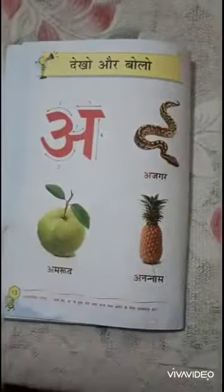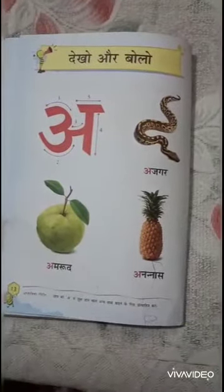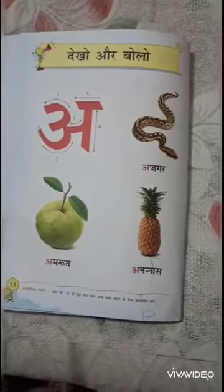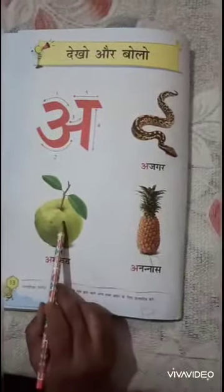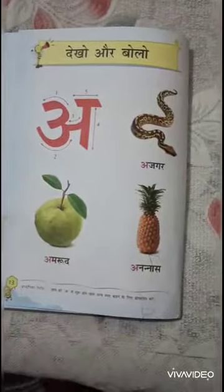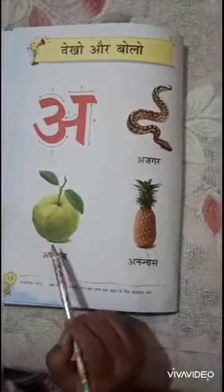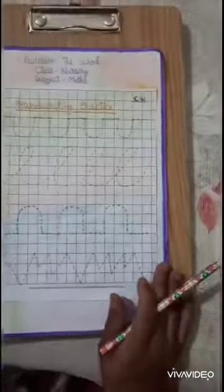Okay students, आप देखे, देखो और बोलो। A - अजगर, अमरूद, अनानास। A - अजगर, अमरूद, अनानास।